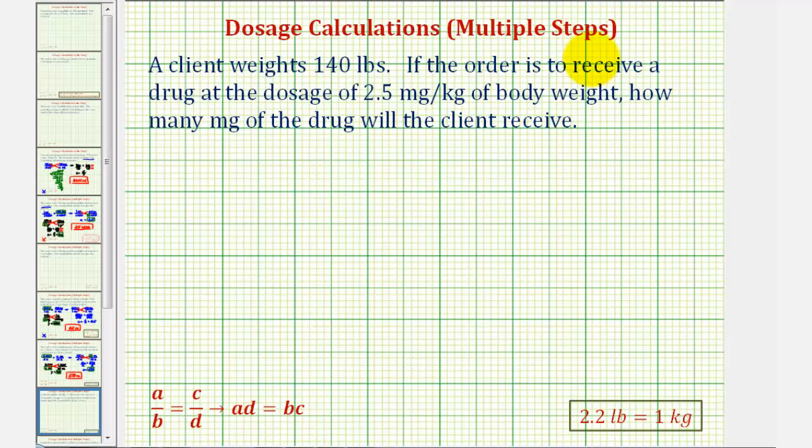Welcome to a dosage calculation requiring multiple steps. A client weighs 140 pounds. If the order is to receive a drug at the dosage of 2.5 milligrams per kilogram of body weight, how many milligrams of the drug will the client receive?